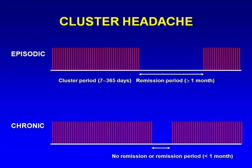Attacks tend to occur during fall or springtime, lasting anywhere from seven days to one year with a remission period of more than one month — this is the episodic pattern. In less than 10% of cluster headache patients it becomes chronic and is very hard to treat. A device is being developed that is implanted and works on the sphenopalatine ganglion involved in pathophysiology — it has shown some effectiveness in European trials, but FDA has not yet approved it for trials here.